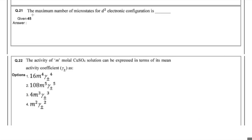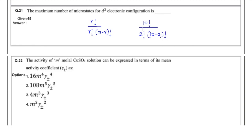The next question asked for the maximum number of microstates for a d² configuration. The formula is N! / (r! × (N−r)!), where N is the total number of spin-orbitals available and r is the number of electrons. For d², this gives 10! / (2! × 8!), and when solved the answer comes out to be 45.